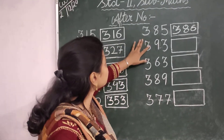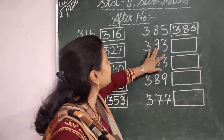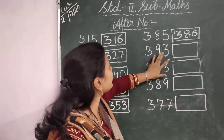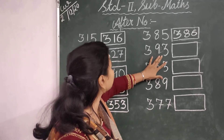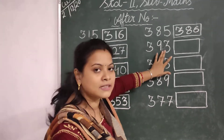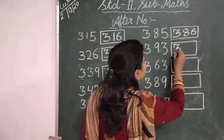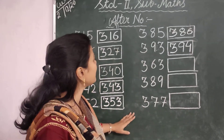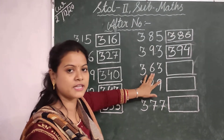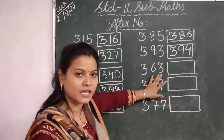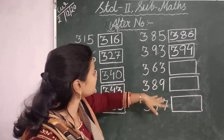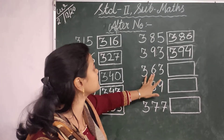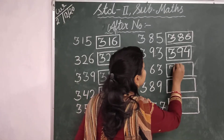Then the next number is 363. The number that comes after 393 is 394. Then the next number that comes after 363 is 364.